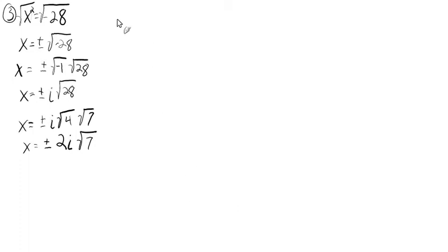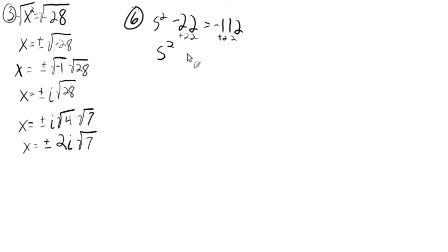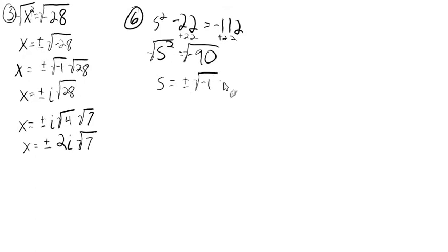Now we'll go to number 6: s squared minus 22 equals negative 112. We'll recognize that there's just s squared there. So if we get s squared by itself and take the square root, that's the easiest path to take. We'll add 22 to both sides, and s squared will be equal to negative 90. Taking the square root of both sides, s equals plus or minus the square root of negative 1 times the square root of 90.